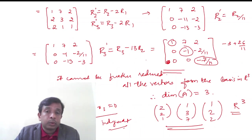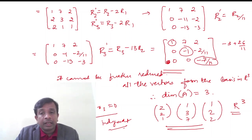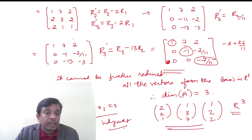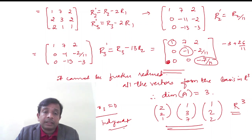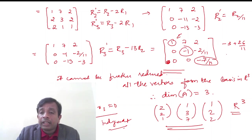Through row operations R2' = R2 − 2R1 and R3' = R3 − 2R1, matrix A gets converted to [1,7,2; 0,−1,−1; 0,−1,−3]. Dividing row 2 by 11 gives [1,7,2; 0,−1,−2/11; 0,−13,−3]. Applying R3' = R3 − 13R2 reduces it to echelon form: [1,7,2; 0,−1,−2/11; 0,0,−7/11].